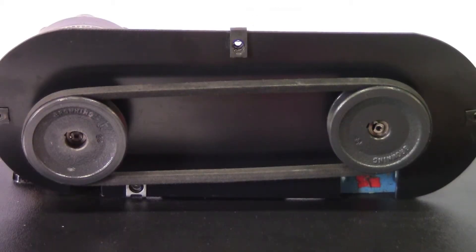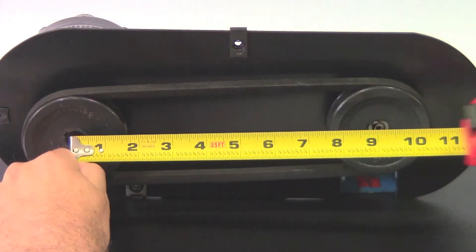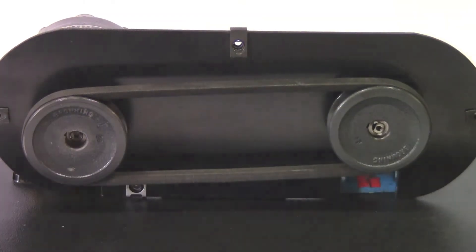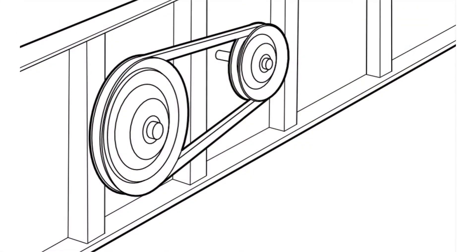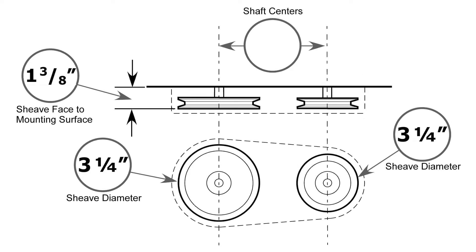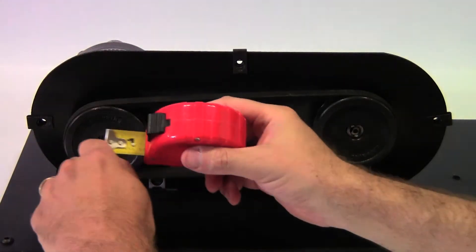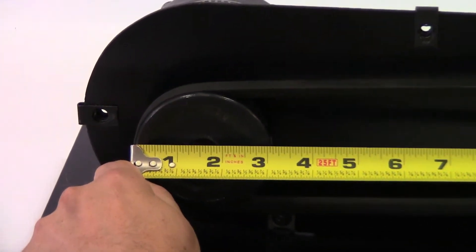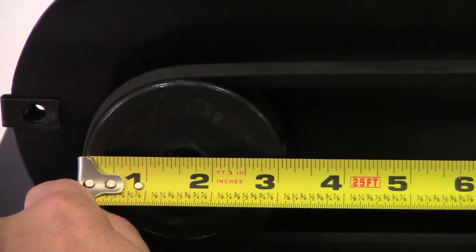The third step is to determine the overall length of the guard. This is done by measuring the center to center distance plus the radius of both shivs plus an additional inch for clearance. This measurement should equal the overall length of the guard, shivs, and belts plus the required additional inch for clearance. In the example here the center to center distance is 9 inches. Both of the shivs have a radius of 1 and 5/8 inches. Adding an additional inch for clearance gives us a minimum guard length of 13 and a quarter inches.